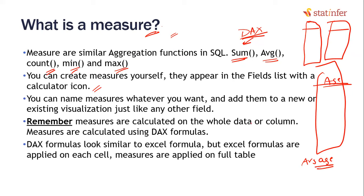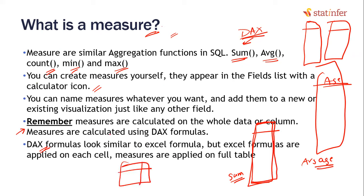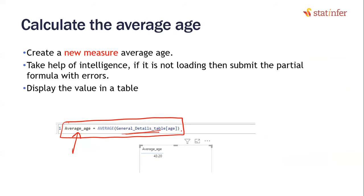Remember, measures are calculated on the whole data or column — these are aggregated measures calculated on the full column or the full data. DAX formulas look very similar to Excel formulas, but there is a huge difference. Excel formulas work on a cell — inside a cell a formula is applied. DAX, however, does not work cell-wise; it works on the whole column.